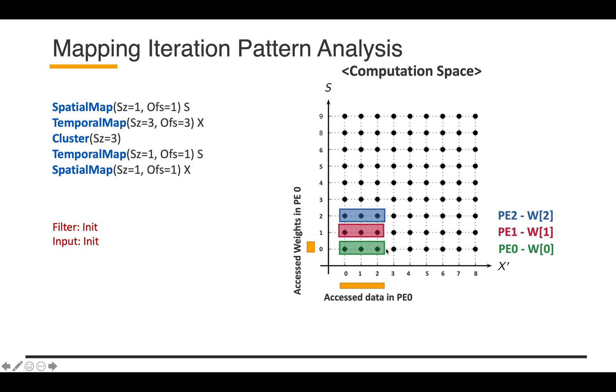This is the initial mapping. That's why I'm calling it init state for the filter, input, and output. This is the initial mapping position. Based on this mapping description, the mapping will move on to the right side, as shown in the diagram.